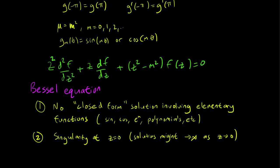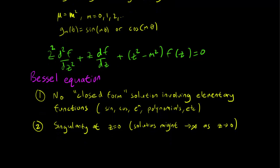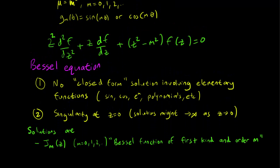However, despite these facts, we can talk about the solutions of the Bessel equation, and these are known as the Bessel functions. Since the Bessel equation is a second-order equation, we expect there to be two linearly independent solutions. And let's call the first one J_m(z).